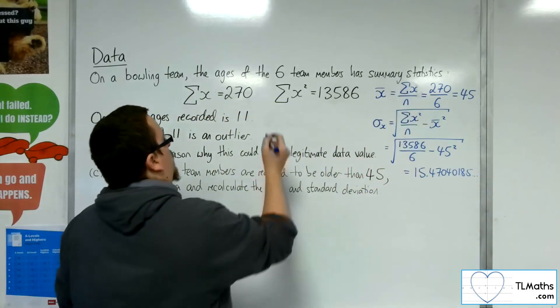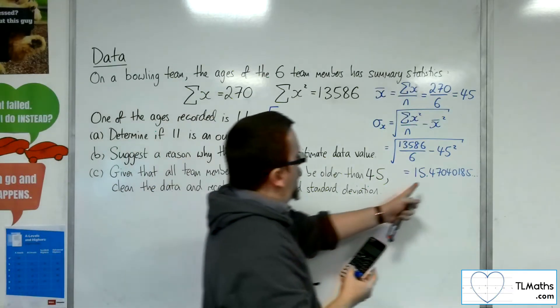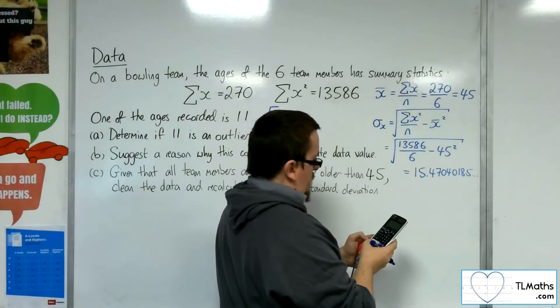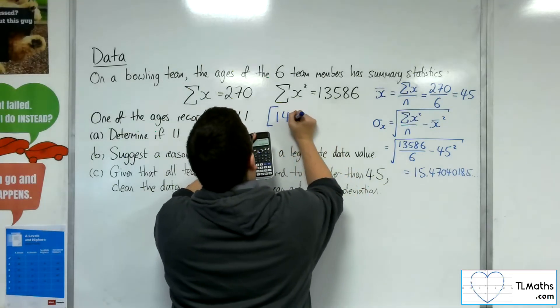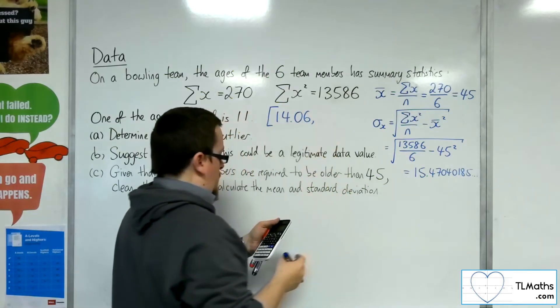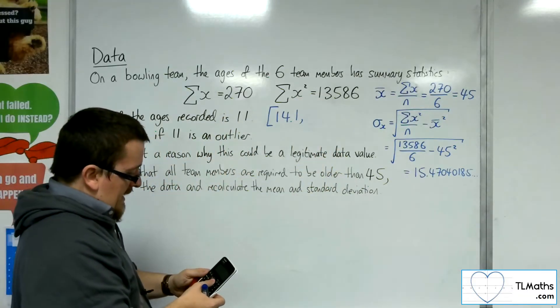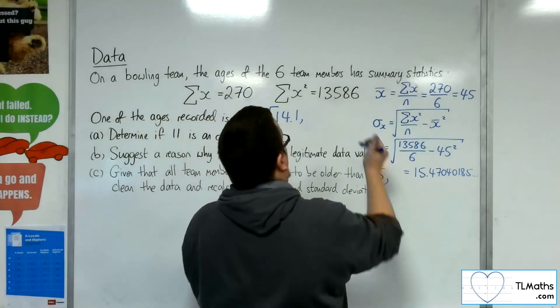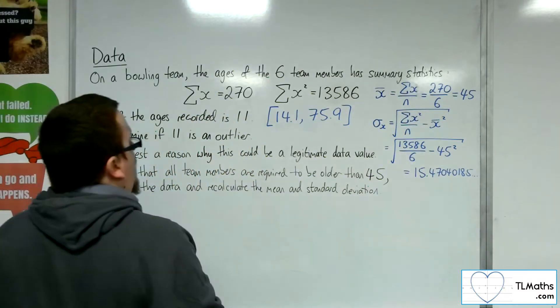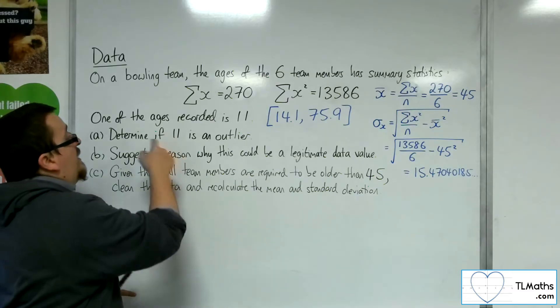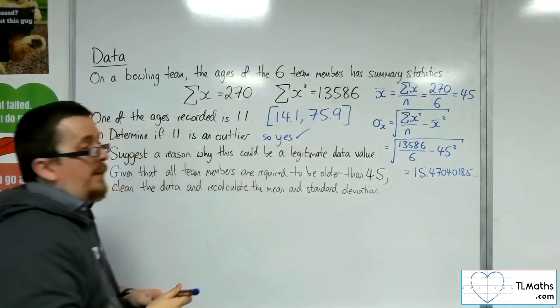So the upper and lower bounds are 45 take away 2 lots of 15.47040185. So that's 14.06, I'm going to go to three sig fig, that's 14.1. And then adding, we get 75.9. So if there are any ages less than 14.1 or greater than 75.9, then it's considered an outlier. 11 is less than 14.1. So yes, it is considered an outlier.